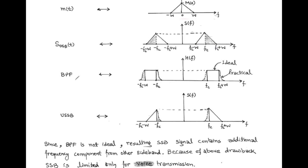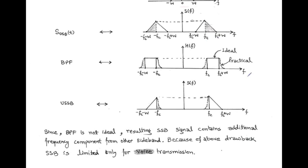We use a bandpass filter adjusted to pass the upper sideband and suppress the lower sideband, limiting it between F_C and F_C + W. The ideal bandpass filter and the practical bandpass filter are both represented here. Since the bandpass filter is not ideal, the resulting upper single sideband output contains additional frequency components from the other sideband, as shown by the shaded region. Because of this drawback, SSB is limited only to voice or speech transmission.